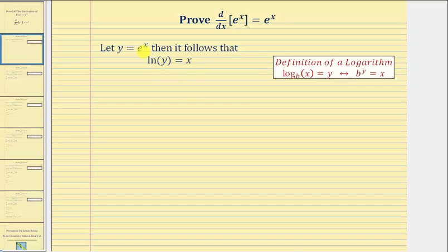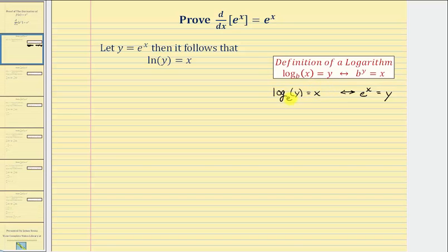Let's take a closer look at this. If we start with the exponential equation e to the x equals y, by definition of a logarithm, the equivalent log equation would be log base e of y equals x. Remember, a logarithm is an exponent. Notice how the exponent here is x, and on the left we have the logarithm is equal to x. But we also know log base e is natural log, so we write natural log y equals x.